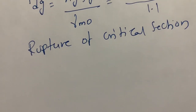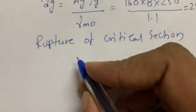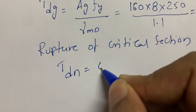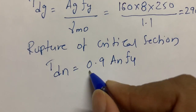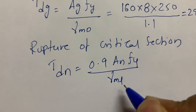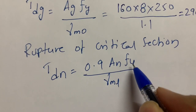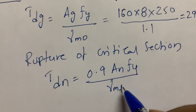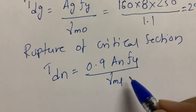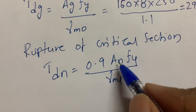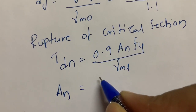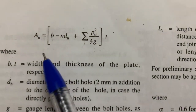For rupture of the critical section, the code specifies on page 33: Tdn = 0.9·An·fu / γml. Here fu is the ultimate stress of the plate and γml is the partial safety factor. We need to find An, the net effective area.